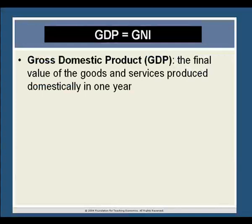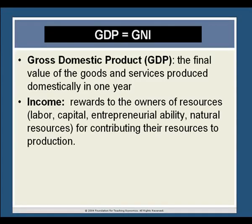Gross domestic product, or GDP, is defined as the final value of all goods and services produced annually in a country, and it's the most commonly used measure of a nation's total production. GDP is an output or production measure, but we can use it as an indicator of income. Production generates income — that is, resource owners are rewarded for contributing their labor, capital, natural resources, or entrepreneurial efforts to the making of goods and services.